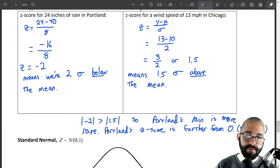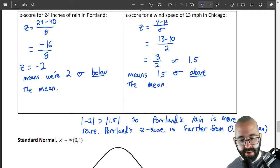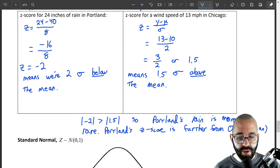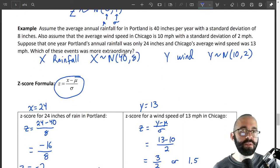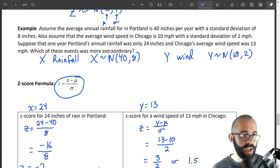in relationship to the standard deviation. So we're standardizing it, because 24 is much further from 40 than 13 is from 10. But we have to standardize it because distance means different things in each of these cases.